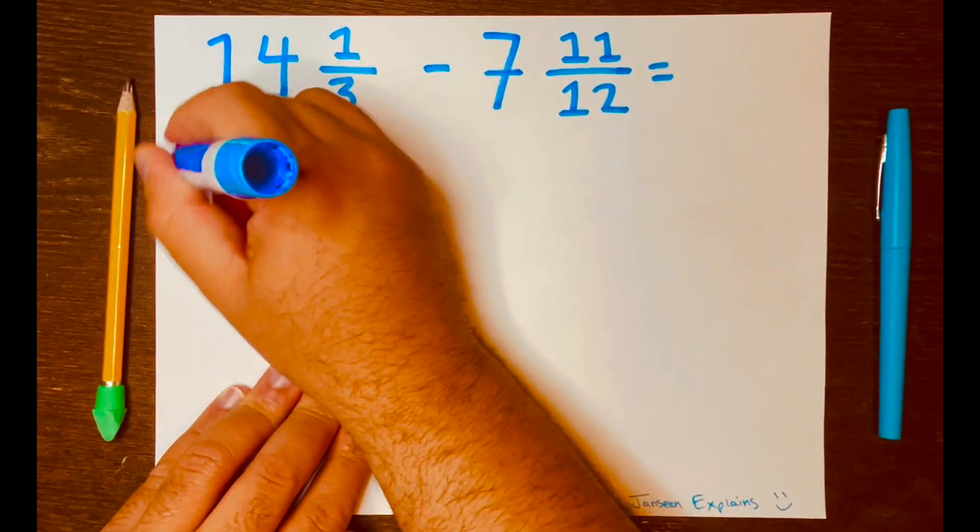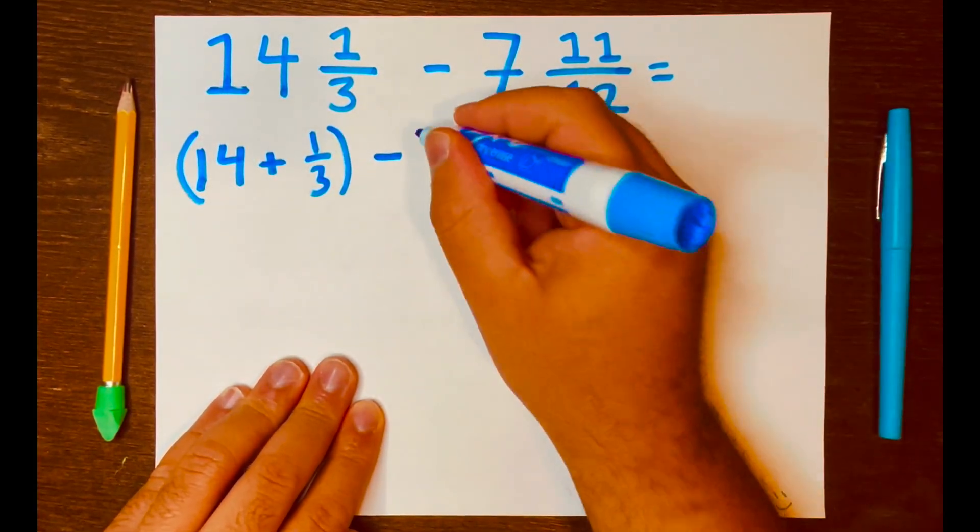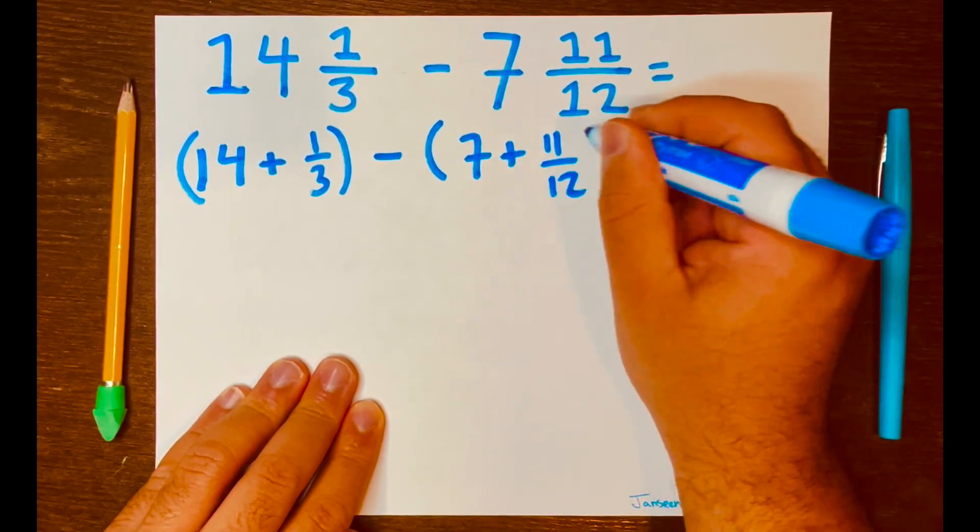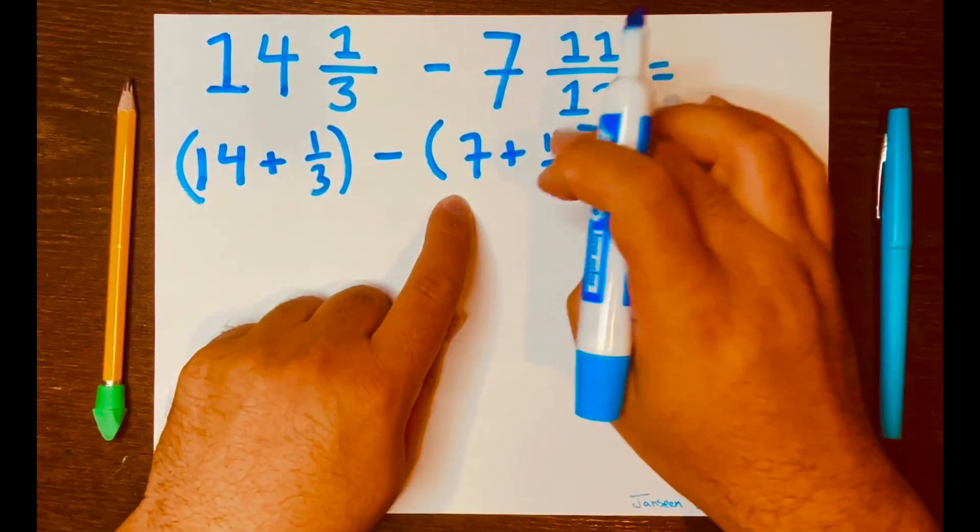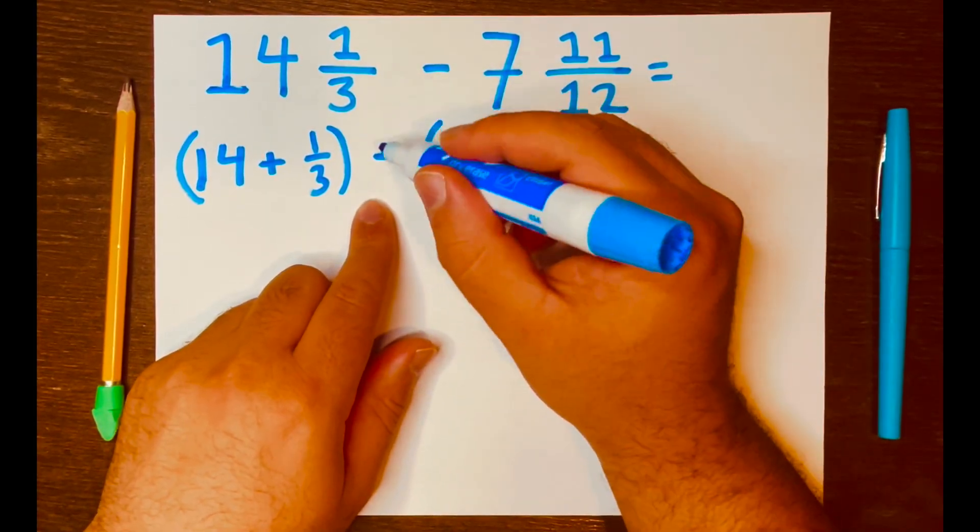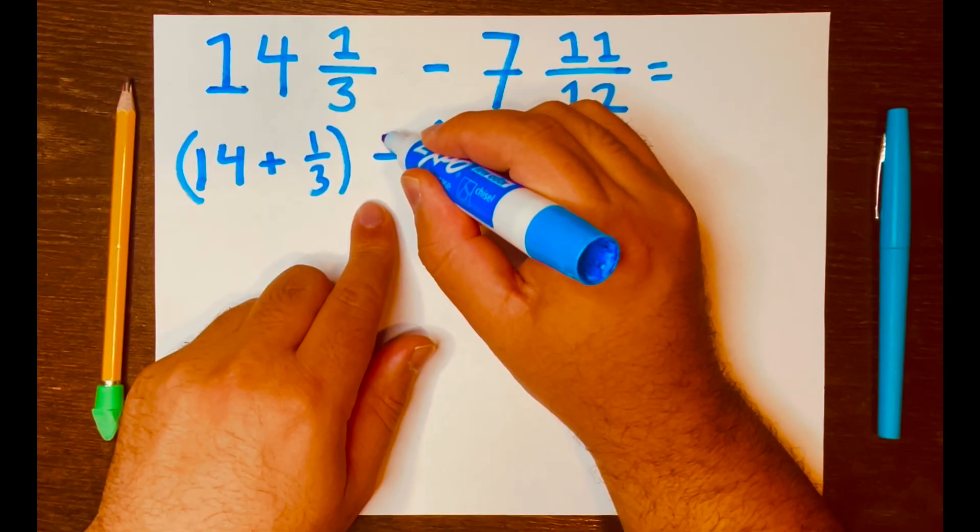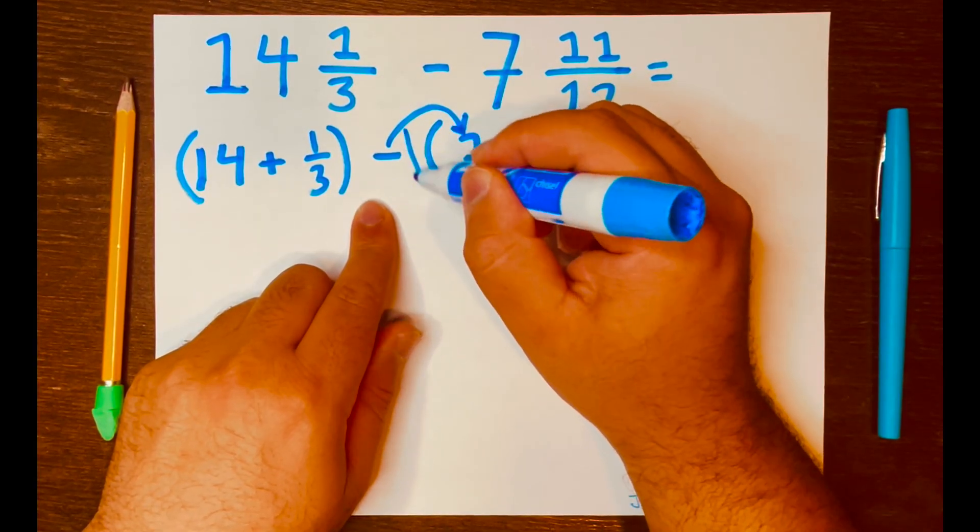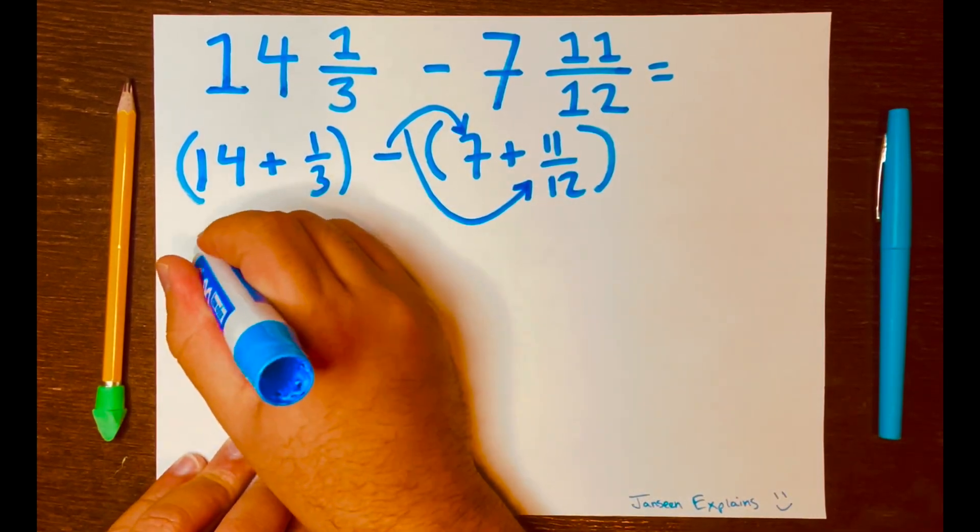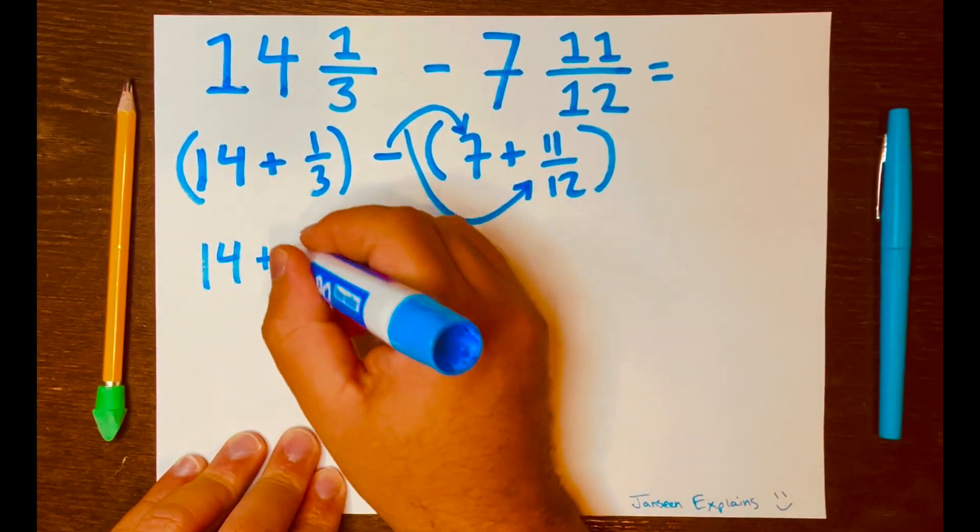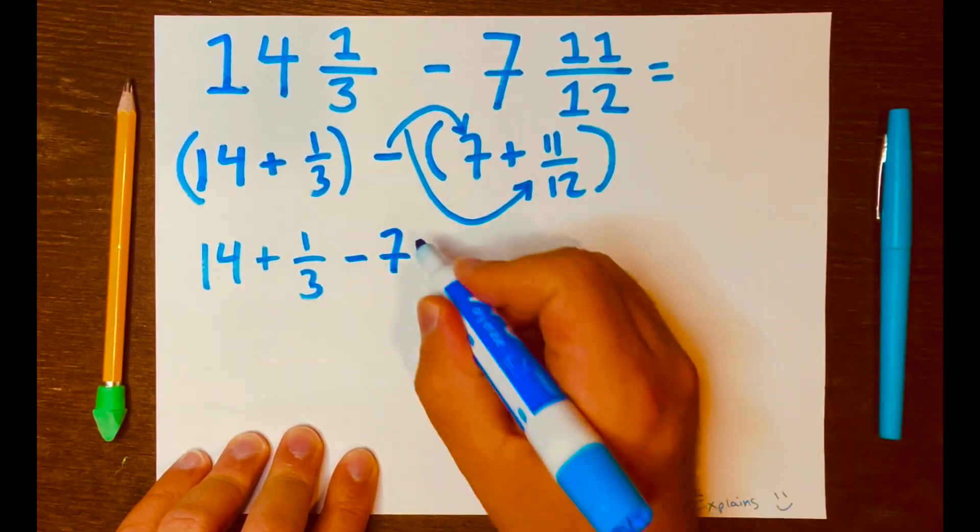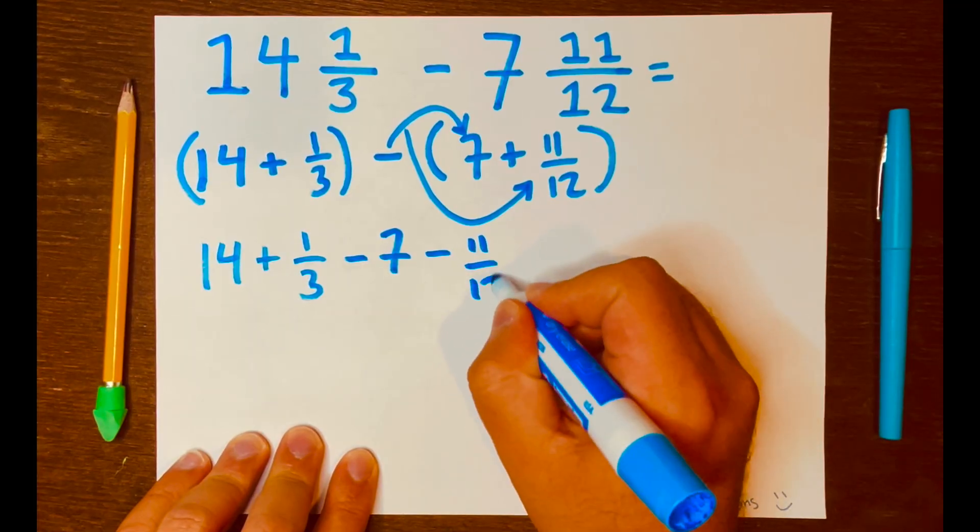So, 14 plus 1 over 3, and they'll be in the parentheses, minus 7 plus 11 over 12, and 7 plus 11 over 12, it's inside these parentheses. Next, I want to distribute this minus symbol to the 7 and to the 11 over 12. And it'll be written like this, 14 plus 1 over 3, minus 7, minus 11 over 12.